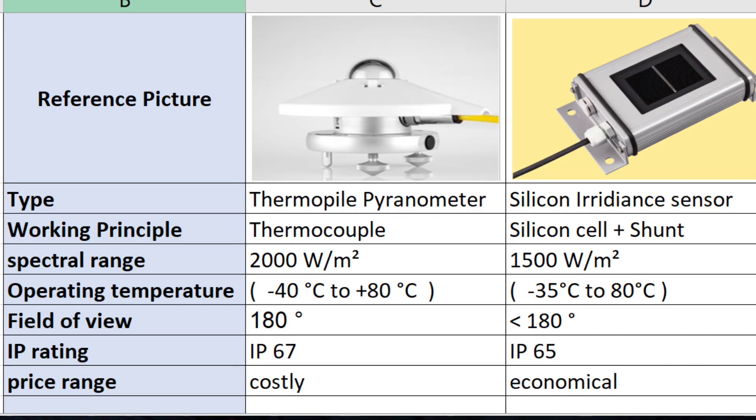Here I have a reference table for you: on one side you have the thermopile pyranometer, and on the other side the silicon irradiation sensor. The CMP3 pyranometer works on the principle of the thermocouple effect, whereas the silicon irradiation sensor works on a silicon cell in collaboration with a shunt resistance connected in series.